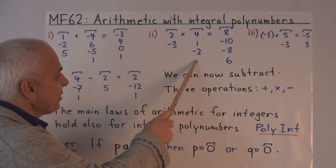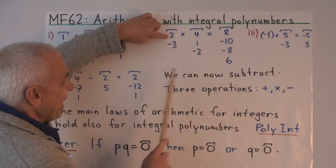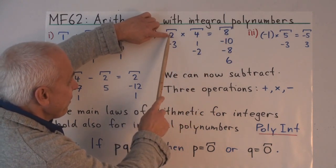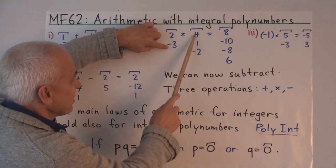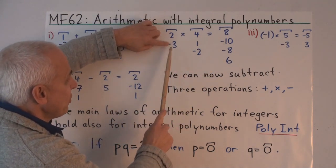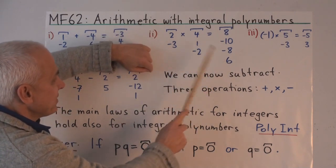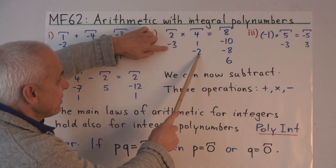Here's how we multiply two of them, exactly the same rule. Two times four gives us the eight. The minus ten comes about from two times one plus minus three times four. The minus eight is two times minus two plus minus three times one plus zero times four. And the six is minus three times minus two.